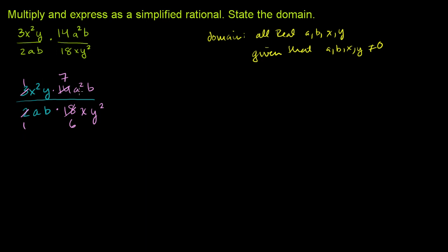And then we can divide a² divided by a, so you're just left with an a in the numerator. And a divided by a is just 1. You have a b over a b. Those guys cancel each other out.